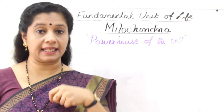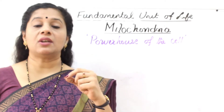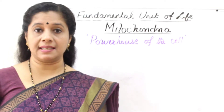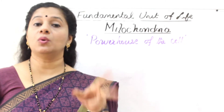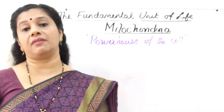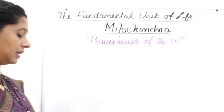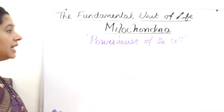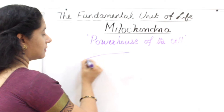From the glucose, energy is released within the organelle called mitochondria using oxygen. The oxygen we take in during respiration also goes to different cells, where it breaks down glucose in order to release energy for our activities. If you look at the structure of mitochondria, it is an oval-shaped structure.